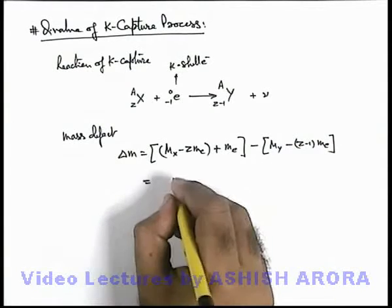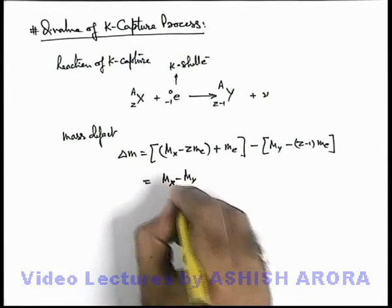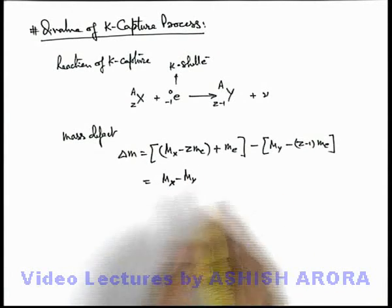If we simplify, the result gives us M_X minus M_Y. Coincidentally, the mass defect is similar to that of beta minus decay.